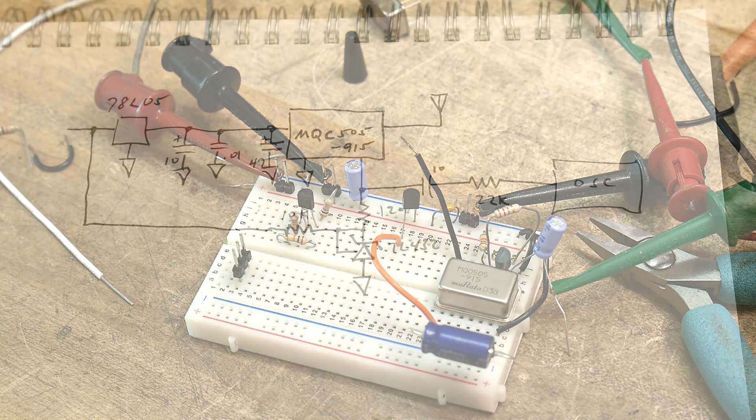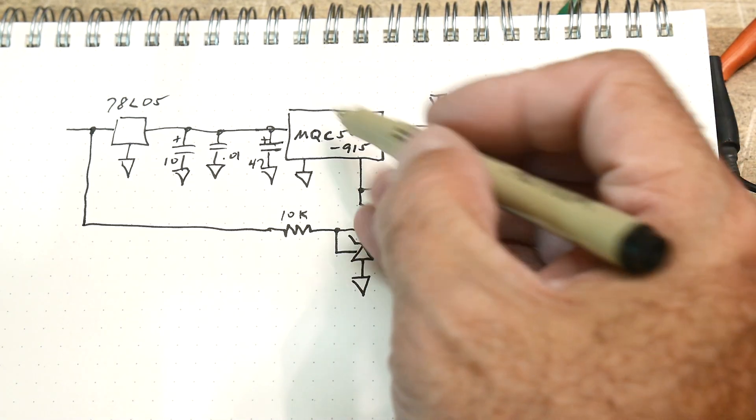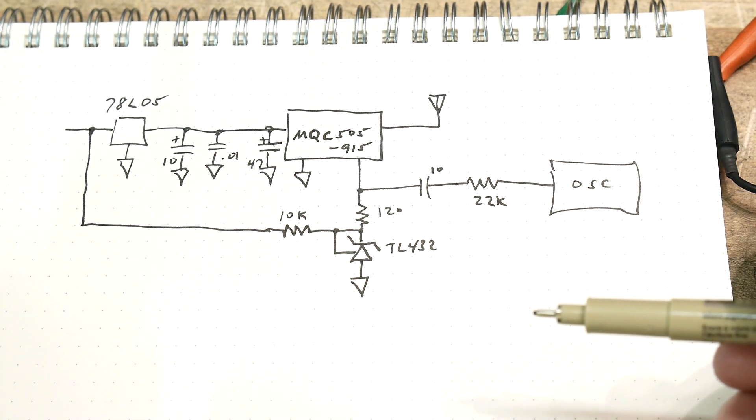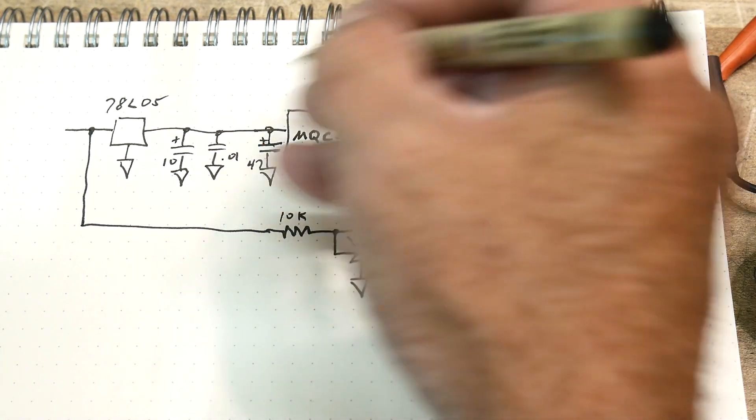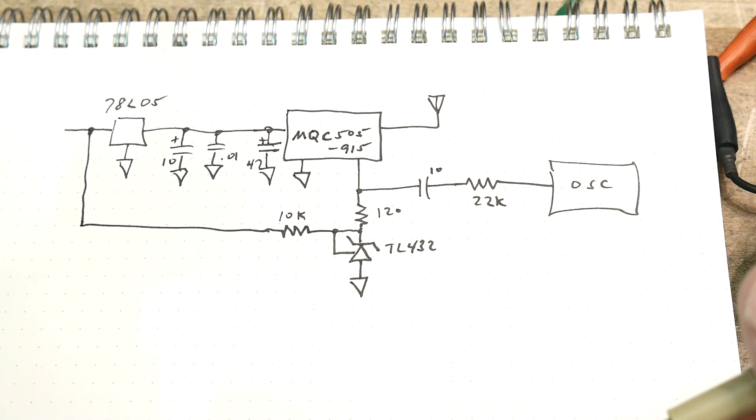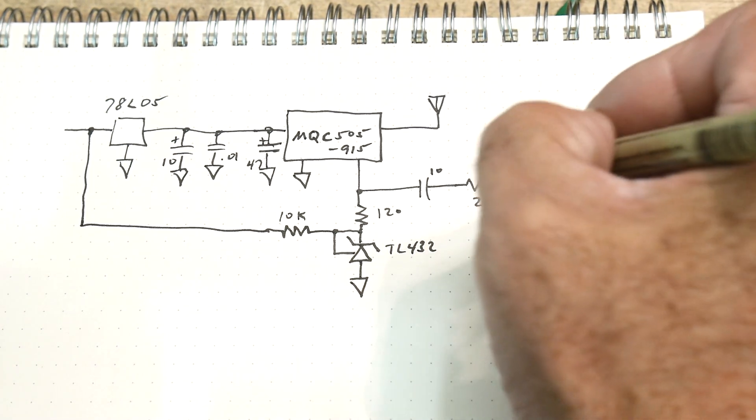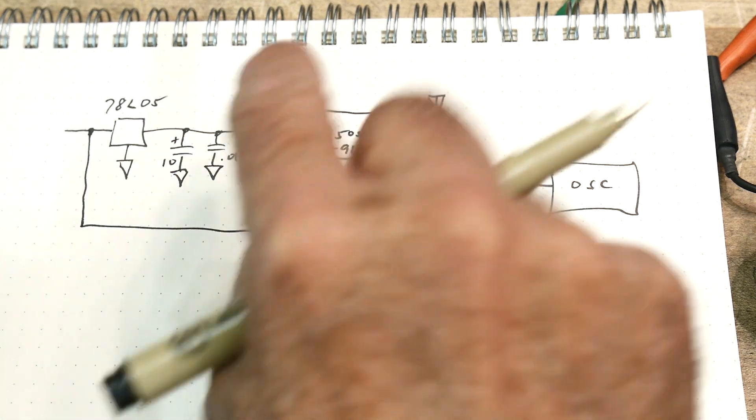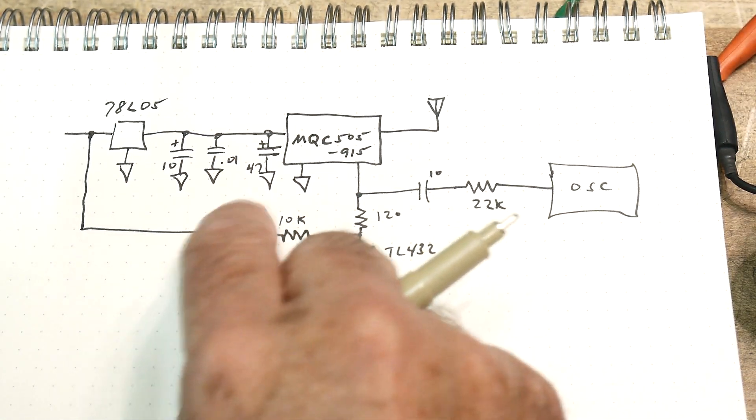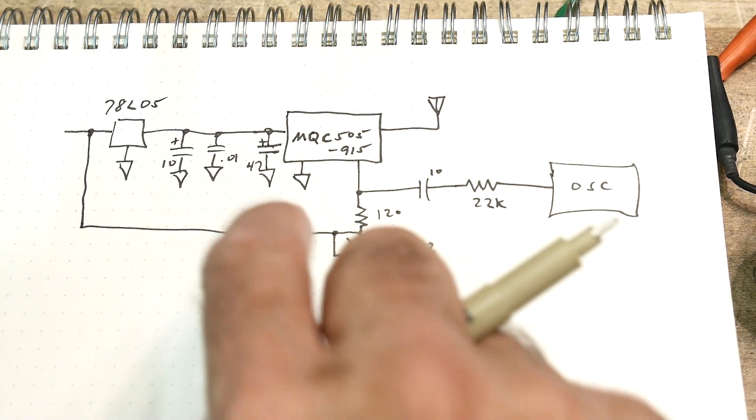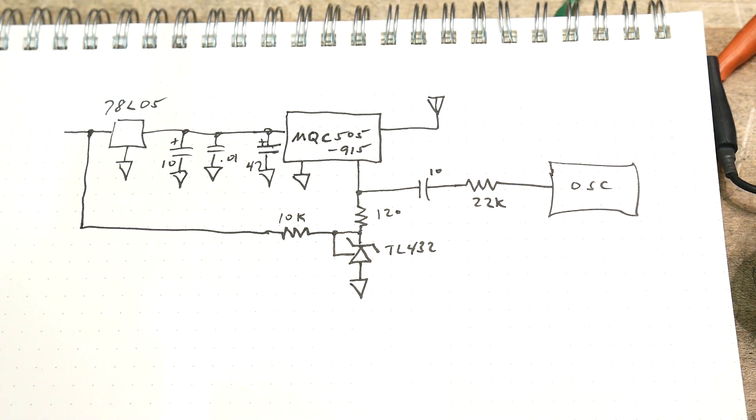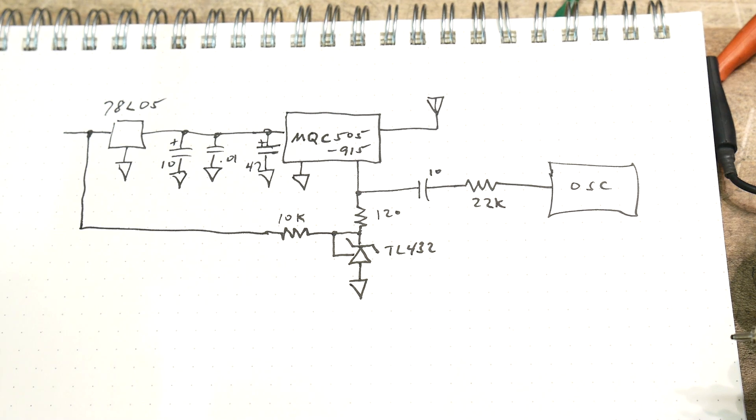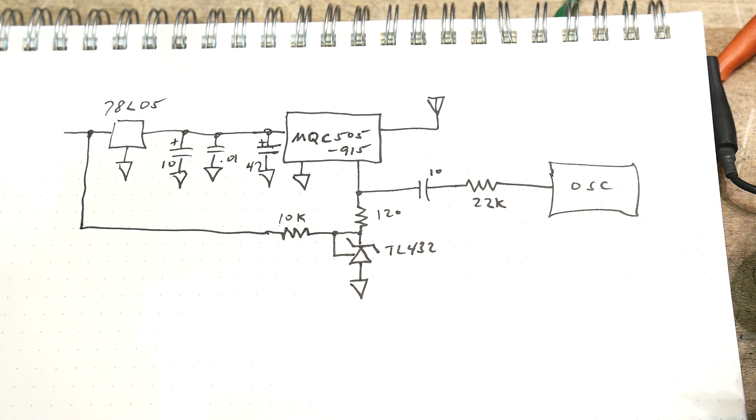Yeah, so that's the verbal description. Let's go ahead and draw a schematic and I'll show you what I did. All right, so this is what I came up with. This is the oscillator can - it's an MQC 505-915. I think the fellow who gave me these has a bunch of them and I think he's going to put them on eBay, so you can watch out on eBay and see if you can pick one of those up if you want to play at home. So I needed a good reference voltage. I have a 78L05 coming in, so I have five volts here. There's a 10 microfarad, 0.01, and then there's a 47 microfarad very close to the can. Everything's smoothed out so five volts is going into the can.